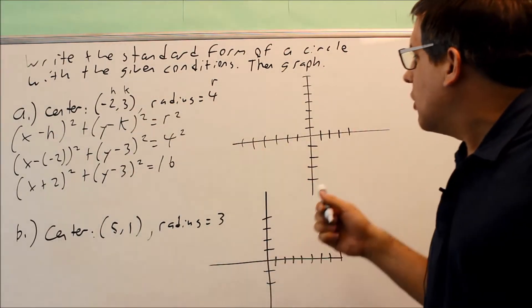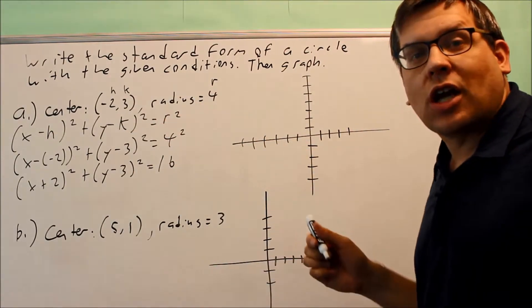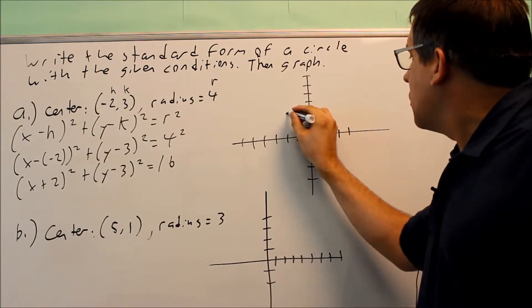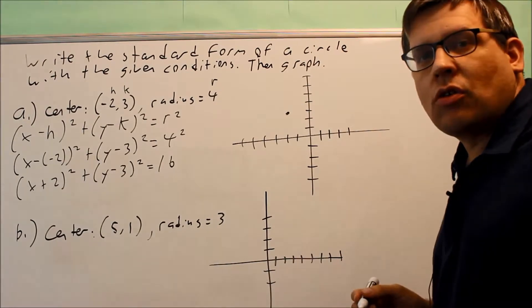The first thing you're going to do for making the graph is you want to go to the center, (-2, 3). So we go this way 1, 2, and we're going to go up 3. So right there, that's going to be your center.